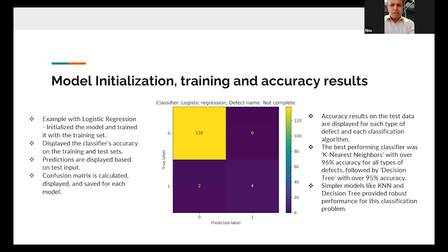Here is a confusion matrix that we discovered. The main conclusions of this presentation are the following. I think that logistic regression is the best, K-nearest neighbors, and after that decision trees.